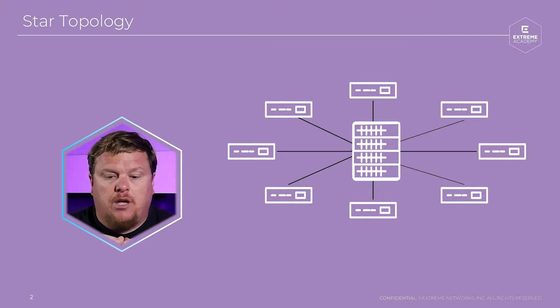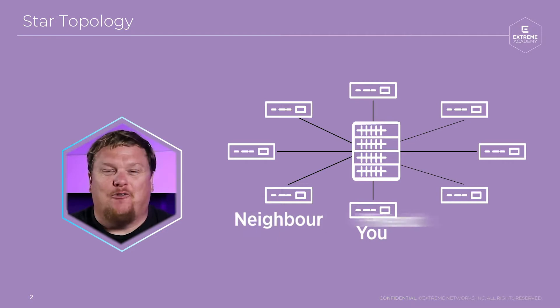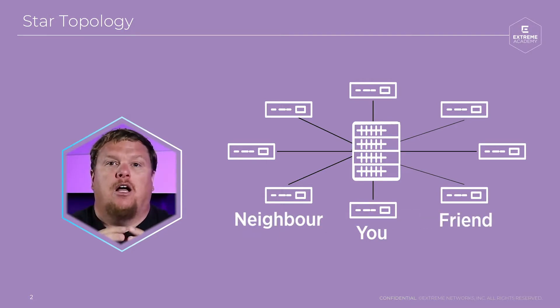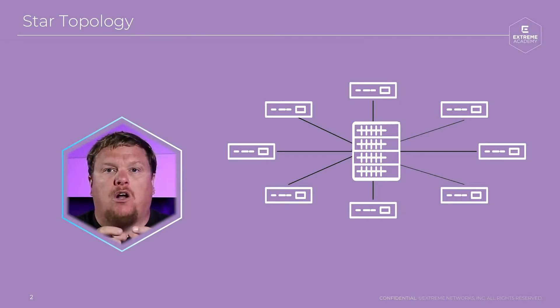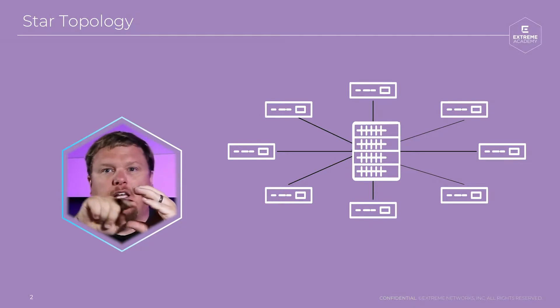For example, you right now are watching this video. Let's say you're doing that over Wi-Fi. You are connected to an access point — or you may call it a router, that's okay. Is anyone else connected to that right now? Likely yes — whether it's your neighbor, a friend, or multiple people in the family, in your dorm, or in your business. Multiple people are connected to that central point. That is called a star topology: a central device that has multiple devices connecting to it.